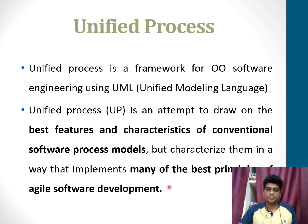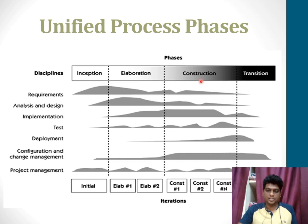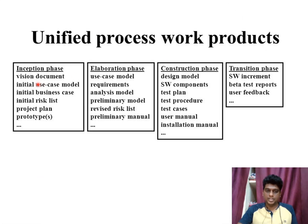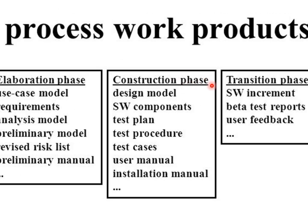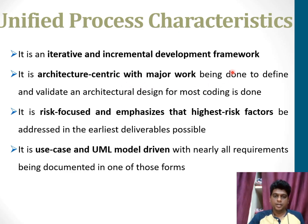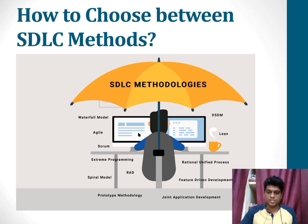The next process is the Unified Process, whose framework is based on the Unified Modeling Language (UML). It draws the best features and involves characteristics of various process models. Its phases are inception, elaboration, construction, and transition. Each phase covers requirements, analysis, design, implementation, deployment, configuration and change management, and project management. In the inception phase, a vision document is created, the use case model and business case are initialized, and the project plan is made. In elaboration, requirements and analysis models are developed and the risk list is revised. During construction, design models are built using all software components and software testing is performed. In the transition phase, feedback is obtained after releasing the beta version. This is a risk-focused framework driven by use cases and UML models.